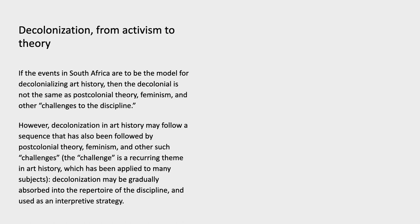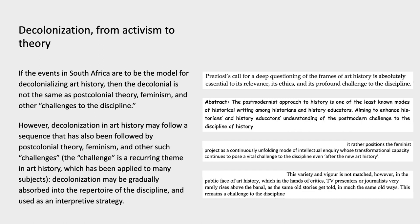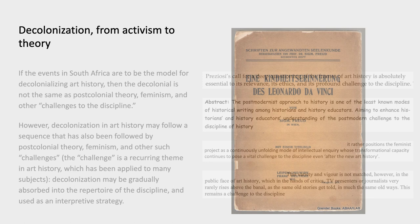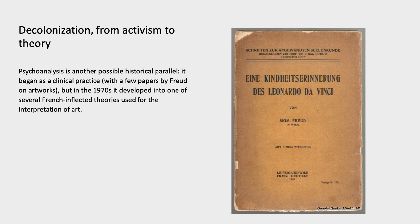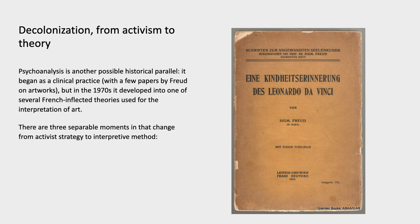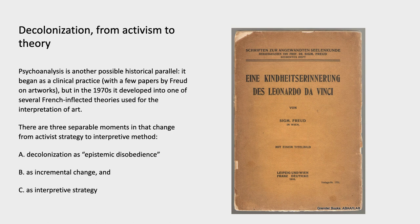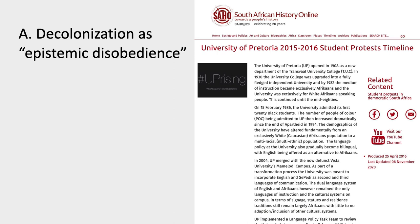If the events in South Africa are to be the model for decolonizing art history, then the decolonial is not the same as postcolonial theory or other challenges to the discipline. However, decolonization in art history might follow a sequence also followed by postcolonial theory, feminism, and other challenges — a recurring phenomenon in art history since the 1970s — where decolonization might be gradually absorbed into the repertoire of the discipline and used as an interpretive strategy. Psychoanalysis is a potential historical parallel: it began as a clinical practice but by the 1970s had developed into one of several post-structural theories used for interpreting art. I think there might be three separable moments: decolonization as epistemic disobedience, as incremental change, and as interpretive strategy.